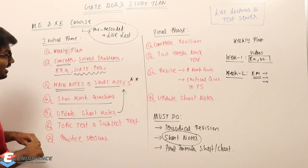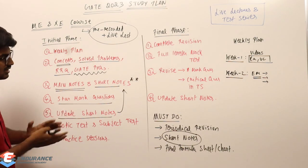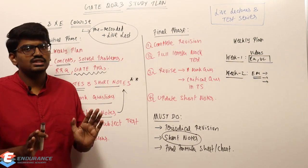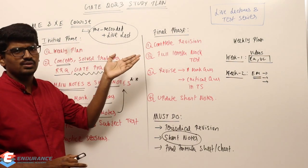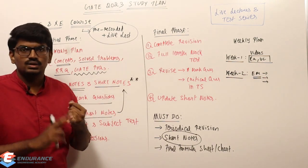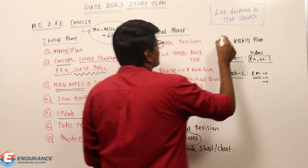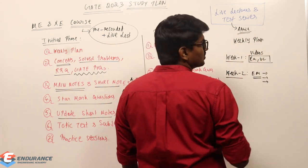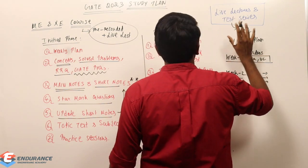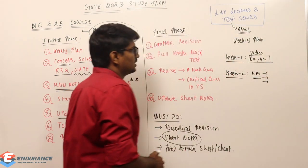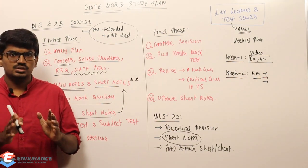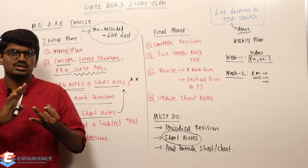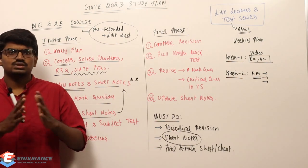Once the test series starts — from the month of April — topic and subject tests begin. If you are registered for the GATE 2023 course, the test series is included and you don't need to buy it separately. For example, if you have completed two subjects and the test for a topic is available, revise those completed topics and then go write the test in the initial phase itself.